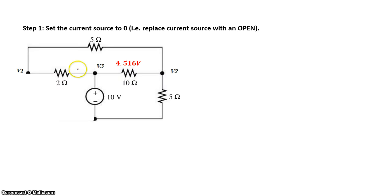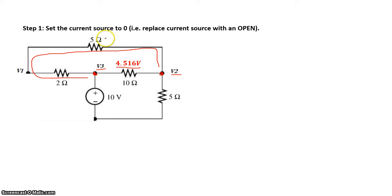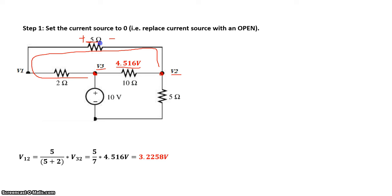Let's go back to our circuit. We have V3 and V2, with a voltage drop of 4.516 volts between them. The 2 ohm resistor and the 5 ohm resistor are also between V3 and V2, so they divide the 4.516 volts proportionally. Using a voltage divider: the voltage across the 5 ohm equals 5 divided by (5 plus 2), times V32 — that is, 5/7 of 4.516 volts, which equals 3.2258 volts.